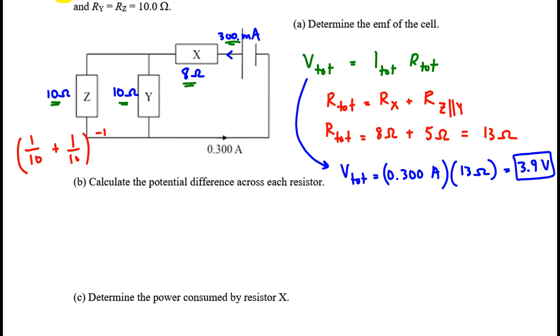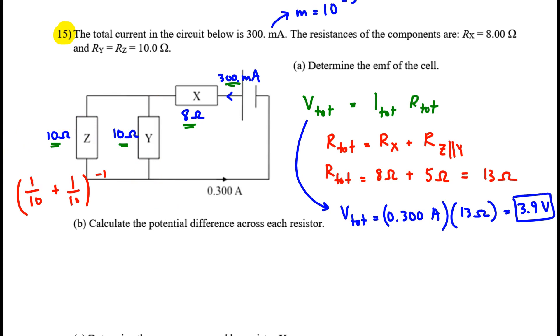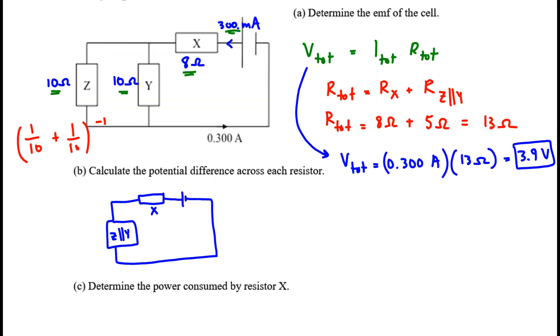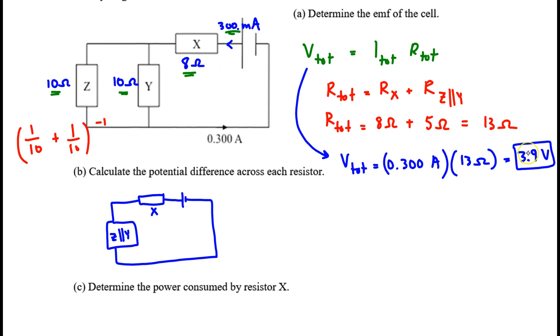Part B. Calculate the potential difference across each resistor. Now to do this, I'm going to redraw the entire circuit. Here's my EMF source, my cell. There's resistor X. And here is the combined resistor of Z parallel with Y. The equivalent resistor. I know the potential difference is, what did I get? 3.9. I'm sorry, the EMF is 3.9.